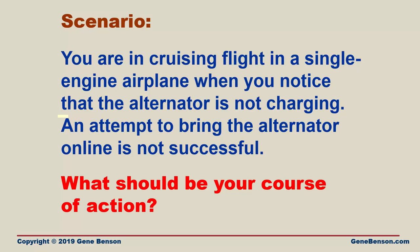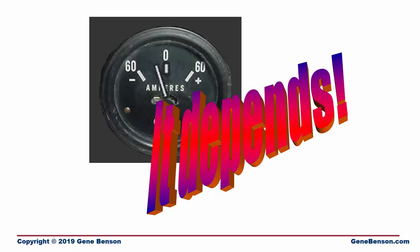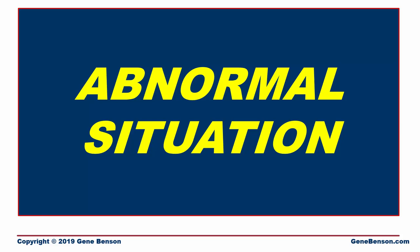Let's look at another scenario. You're in cruising flight in a single-engine airplane when you notice that the alternator is not charging, and an attempt to bring the alternator online is not successful. What should be your course of action? It may not pose an immediate threat if you are flying in Class G airspace, day VFR, in an airplane that does not rely heavily on electrically operated systems such as a Piper Warrior. But at night, in IFR conditions, this can cause problems rather quickly. So when addressing abnormal situations, we must consider the circumstances — alternator failure is generally considered an abnormal procedure, but how we deal with it depends on the circumstances, and we must consider that when creating our abnormal procedures checklists.